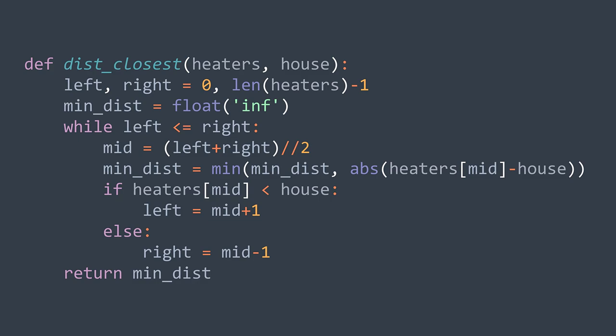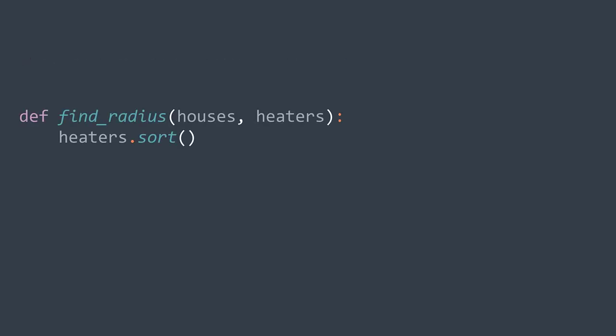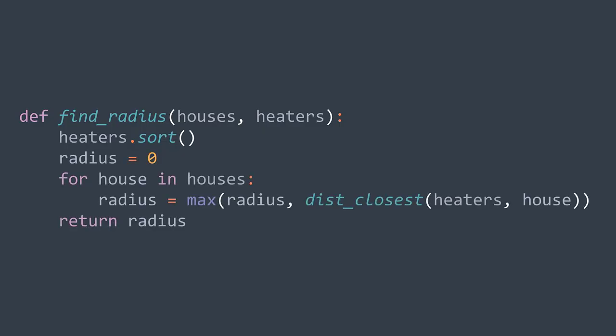To apply binary search the array has to be sorted, which is not necessarily the case — the problem description does not state that the heaters array is sorted. So we start by sorting it. Then we traverse houses while keeping track of the greatest distance between a house and its closest heater, and return it after the loop. Sorting costs time, but it gives us the ability to search in O(log m) time using binary search instead of O(m) with linear search.